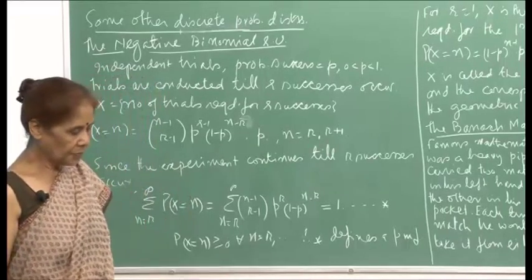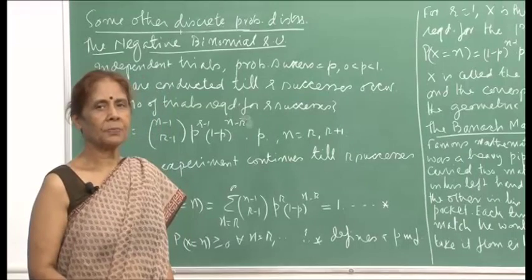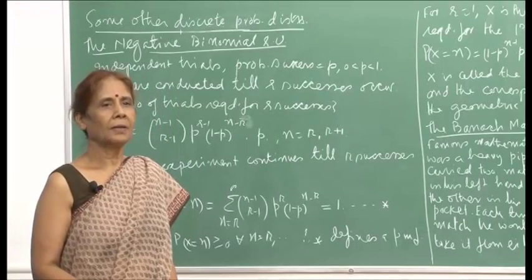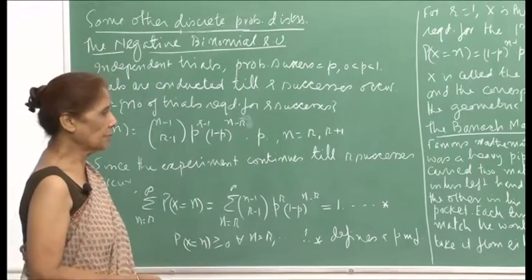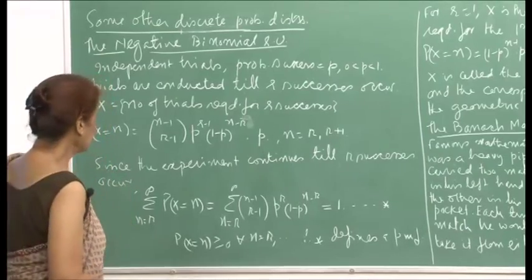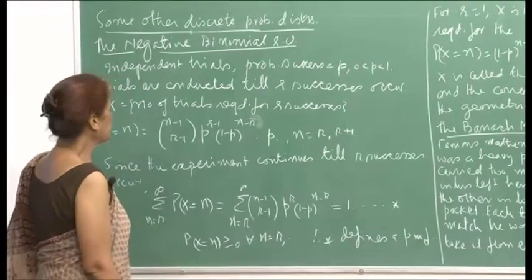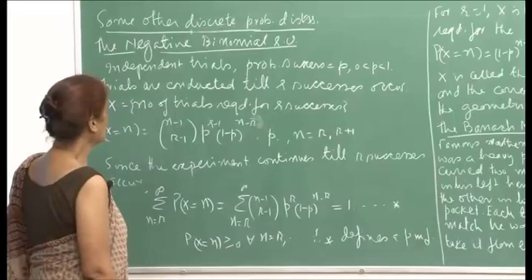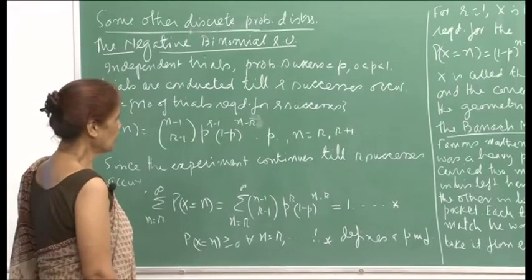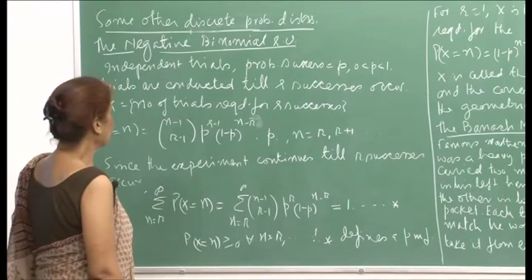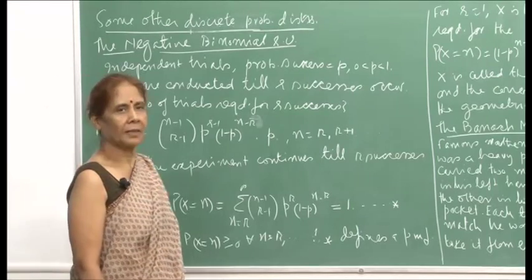You perform n trials, probability of success is p, and then we asked for the probability of r successes. Now here it is the reverse. What we are saying is that independent trials are performed, probability of success is p, p between 0 and 1. Trials are conducted till r successes occur.